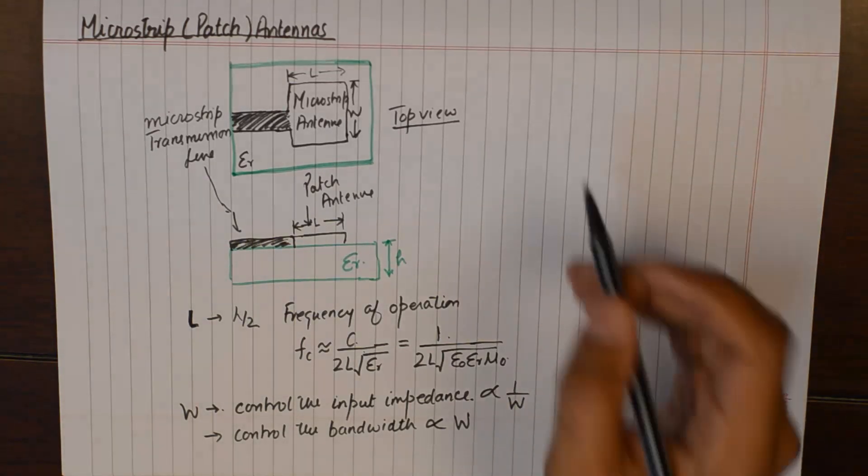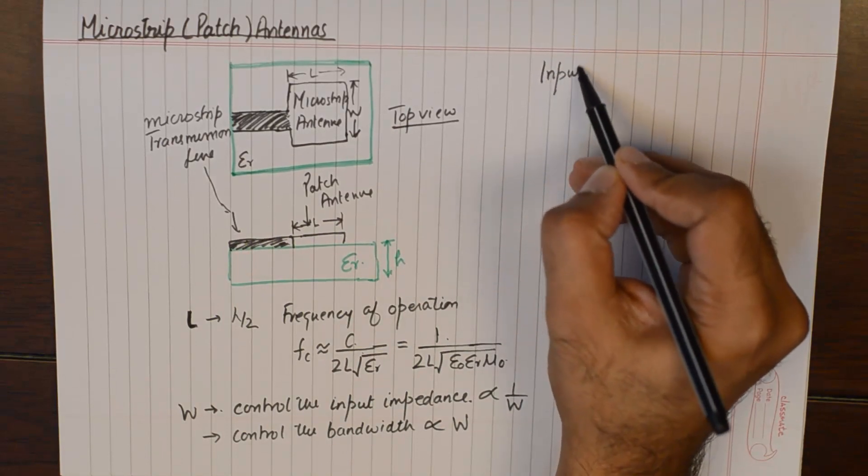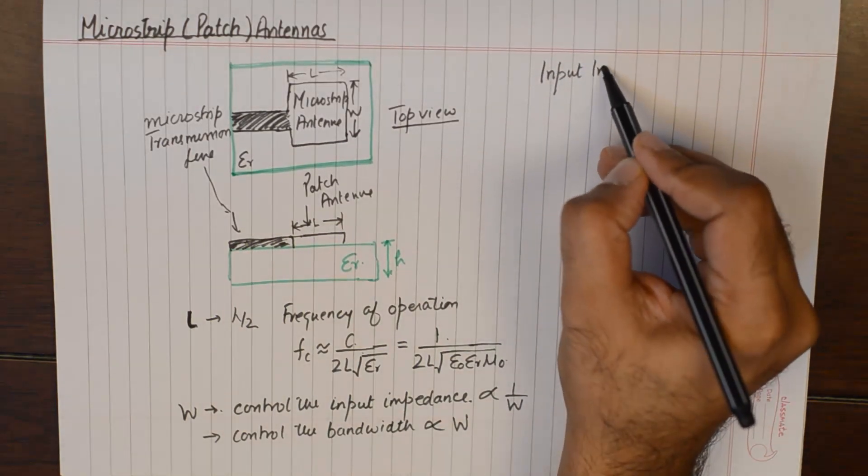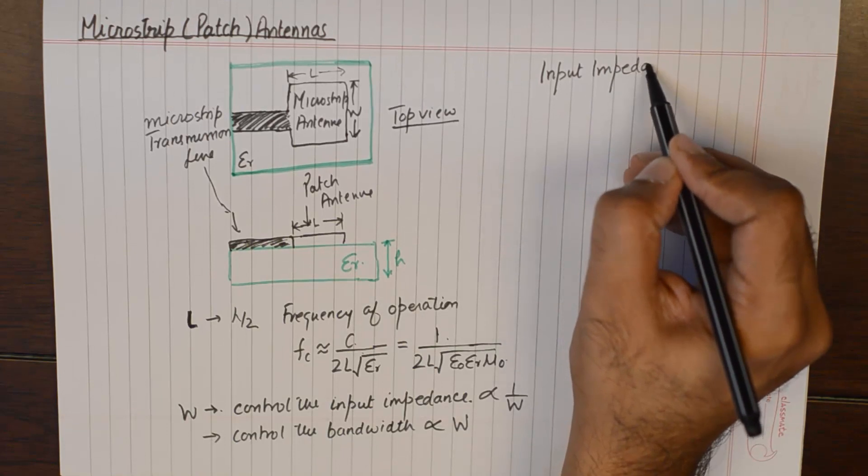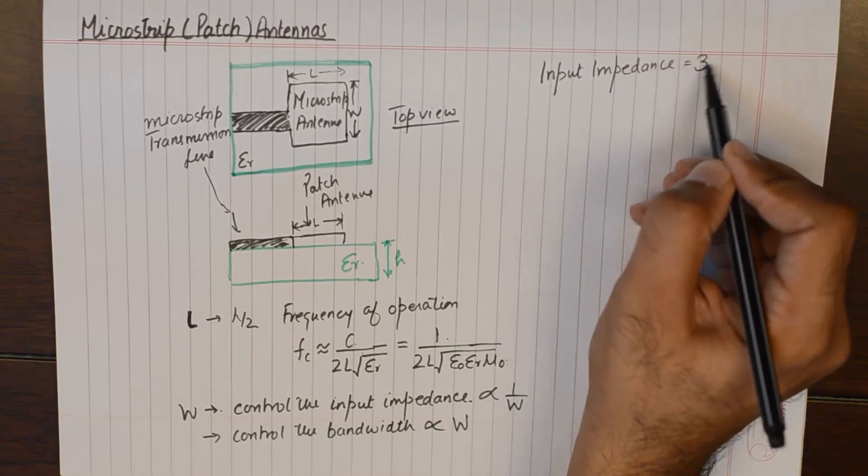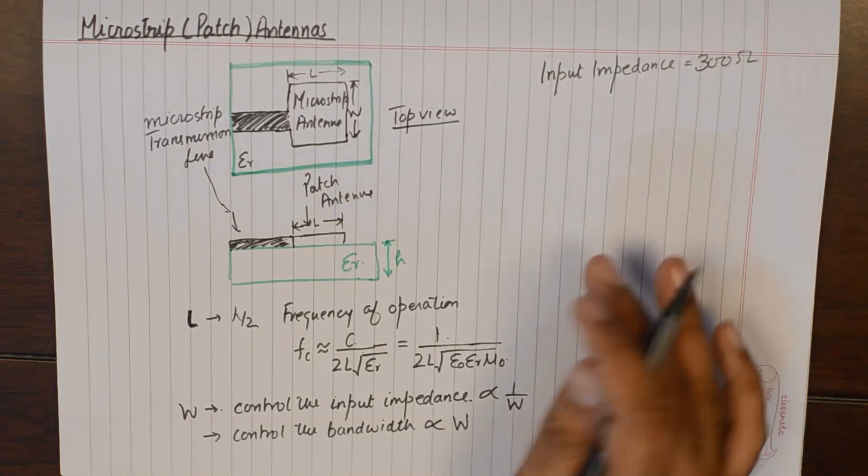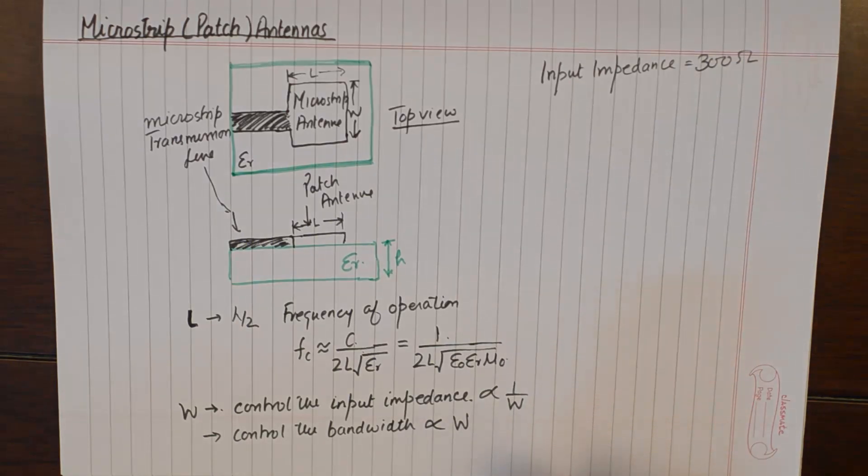To make things easier to remember, the bandwidth would be directly proportional to W. However, impedance will be inversely proportional to W. The input impedance of the patch antenna would be around 300 ohms. We could increase the input impedance by decreasing the width and decrease the impedance by increasing the width.